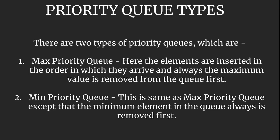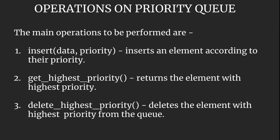Those were the theoretical aspects. Before moving on to the implementation part, it should be stated that we can implement this priority queue using various data structures — like array, linked list, and heap. Different time complexities are associated with these different data structures. Whatever we use, the three main operations to be performed on a priority queue are: first, insert — where not only the data but also the priority will be inserted, and insertions will be done according to their priority; second, get highest priority — which returns the element with the highest priority; and third, delete highest priority — which deletes the element with the highest priority from the queue.